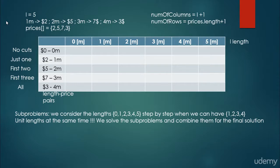We solve the subproblems and combine them for the final solution — this is the typical dynamic programming approach. On the rows we consider subproblems: when there are no cuts, what is optimal? If we can only use 1-meter pieces, what is optimal? Then we add 2-meter cuts, then 3-meter, then all of them. This way we avoid recalculating the same problem over and over as with recursion, and can reuse results with this dynamic table.